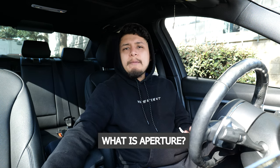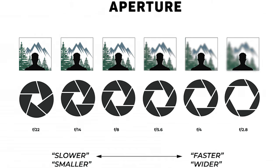What is aperture? Aperture is the amount of light that is being let into your camera's sensor. Aperture is also known as f-stop and can be adjusted based on your camera lens. A lower aperture number will have a wider opening within the lens, therefore allowing more light to enter your camera.